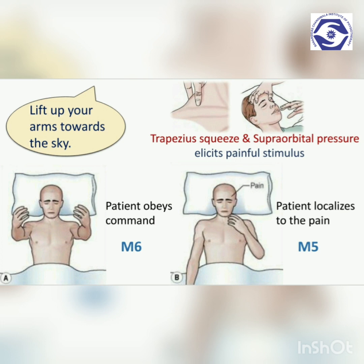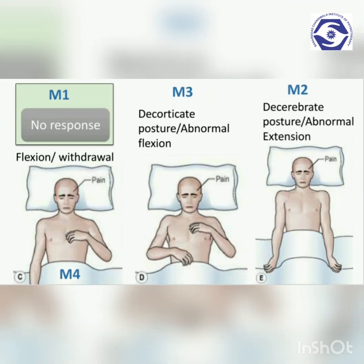If the patient does not obey commands, an external stimulus must be applied. In the absence of any facial, orbital, or skull fractures, pressure can be applied with a thumb over the supraorbital ridge under the eyebrow, gradually increased for a maximum of 15 seconds. An alternative is the trapezius squeeze — provided no cervical fracture is present, the trapezius muscle is squeezed between fingers and thumb. If the patient moves their arm across the midline to chin level to locate the source of pain, the response scores a 5. If the patient flexes their arm abnormally by bending the elbow and weakly withdrawing the hand without localizing toward the pain source, the score is 4.